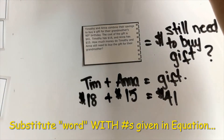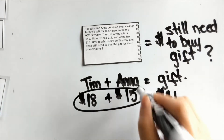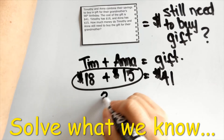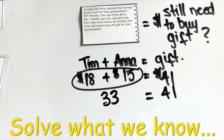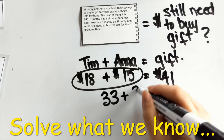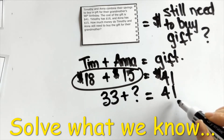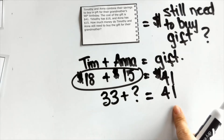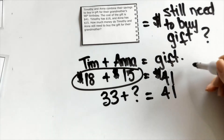Now it's asking how much money do Timothy and Anna still need to buy the gift, so we can solve for this. We add those two together — $18 plus $15 — and we get $33. As you can see, $33 is not the same as $41, which reflects the word 'still' in the question — something is missing because $33 is less than $41. So either I count up from 33 to 41, or the quicker way is to take $41 and subtract $33 to see how much is missing — doing the opposite operation.